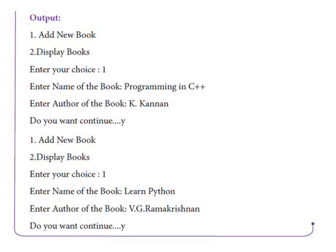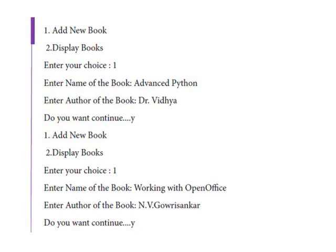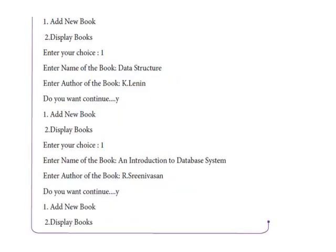Add new book again. Enter name of the book — 'Advanced Python', enter author of the book. Do you want to continue? Yes. Enter name of the book — 'Working with Open Office', enter author. Do you want to continue? Enter name of the book — 'Data Structure', enter author of the book. Do you want to continue? Yes.